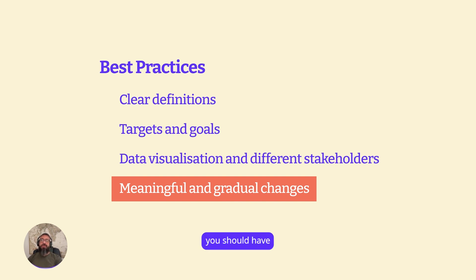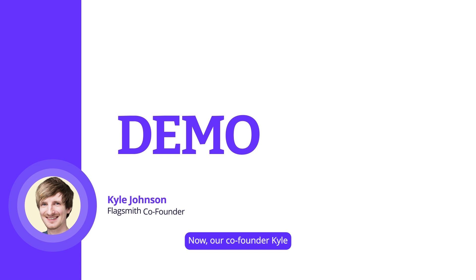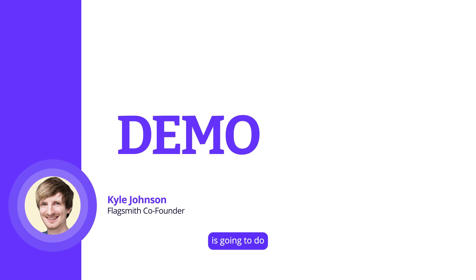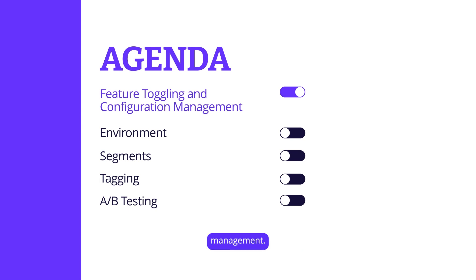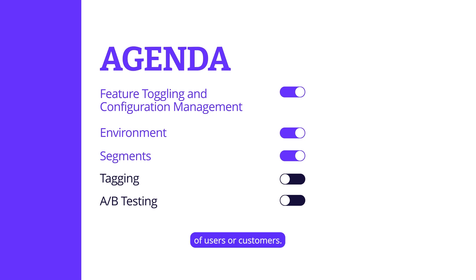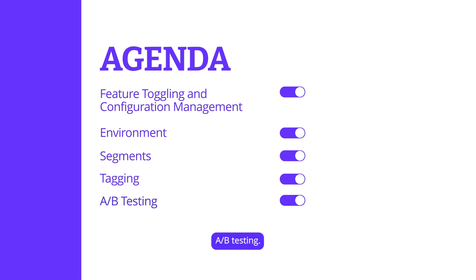With all that, you should have a successful A/B test. Now, our co-founder Kyle is going to do a demo of Flagsmith. He's going to show you the basic usage of features — feature toggling and configuration management — environments, how to segment a population of users or customers, best practices for tagging your features, and of course A/B testing.